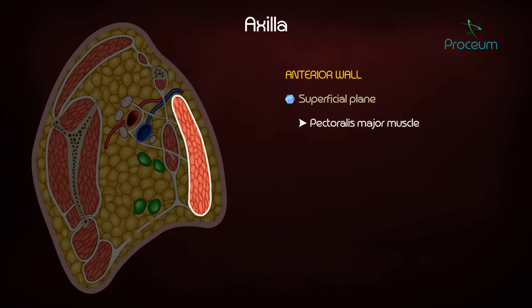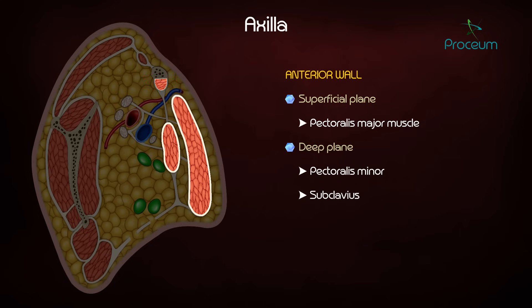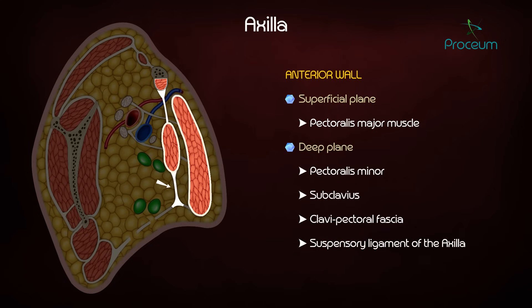The anterior wall: the superficial plane consists of the pectoralis major muscle. The deep plane consists of pectoralis minor, subclavius, clavipectoral fascia, and the suspensory ligament of the axilla.